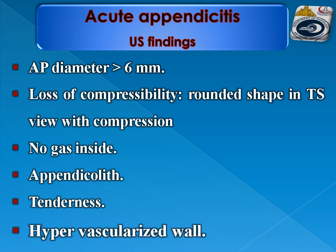In acute appendicitis, ultrasound findings include an outer diameter more than 6 mm, loss of compressibility, no gas inside the appendix, tenderness, and hypervascularized wall. The first two findings — diameter more than 6 mm and loss of compressibility — are the most important ones. The remaining findings may or may not be present.